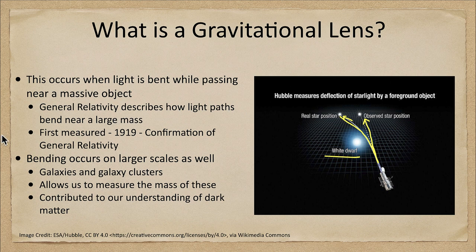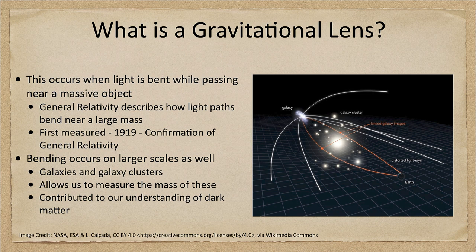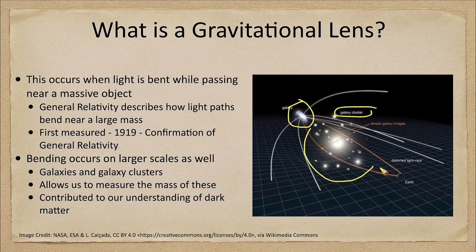This occurs on larger scales as well — it's not just for individual stars or our sun. We can see this in galaxies and galaxy clusters, which can also do the lensing. Here we see a galaxy, and in front of it, between us and it, there's a cluster of galaxies. All of these are other galaxies and they form a total gravitational field, so the light coming from this more distant galaxy gets twisted around and has to follow curved paths through the gravitational field of the galaxy cluster.